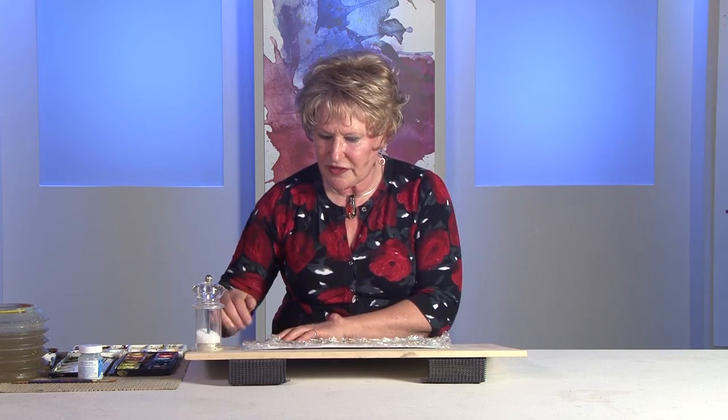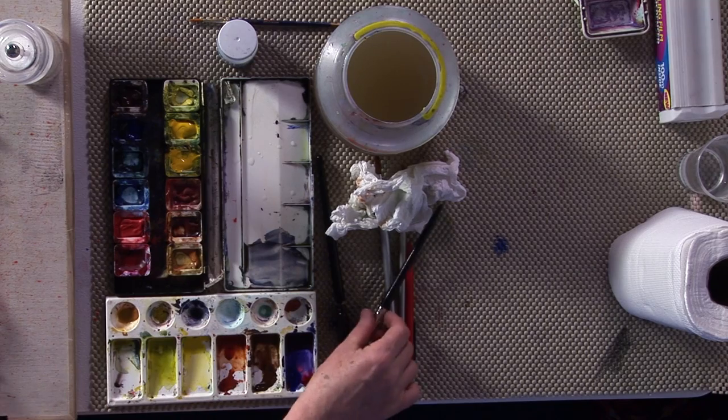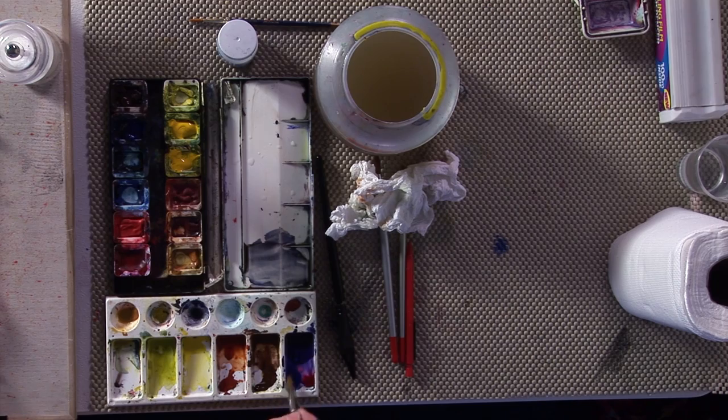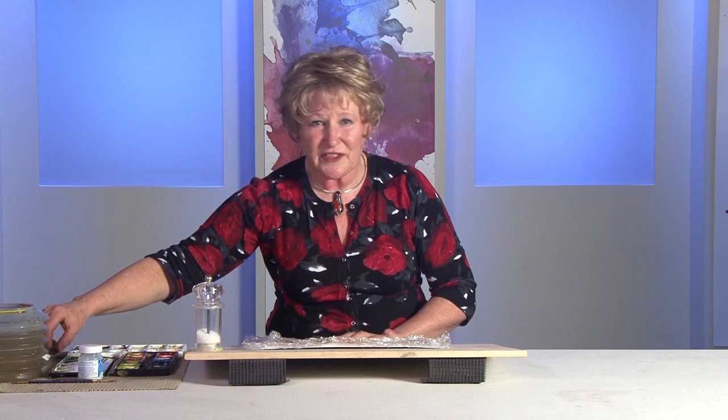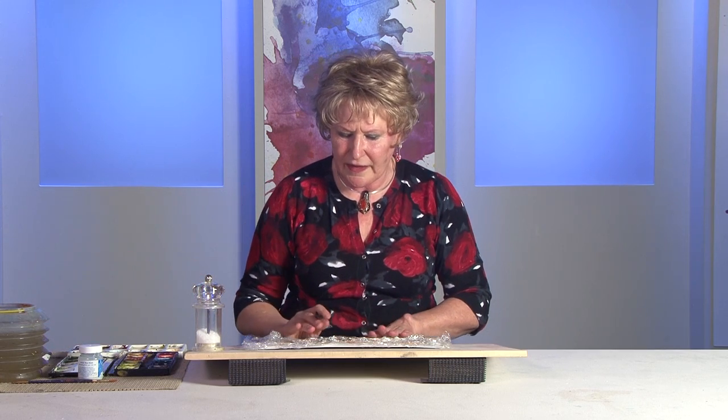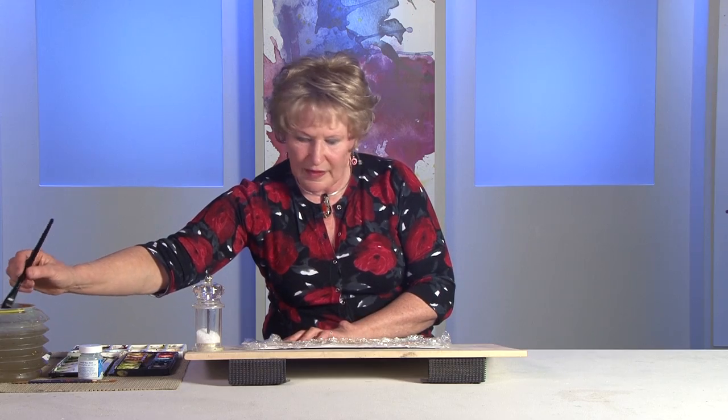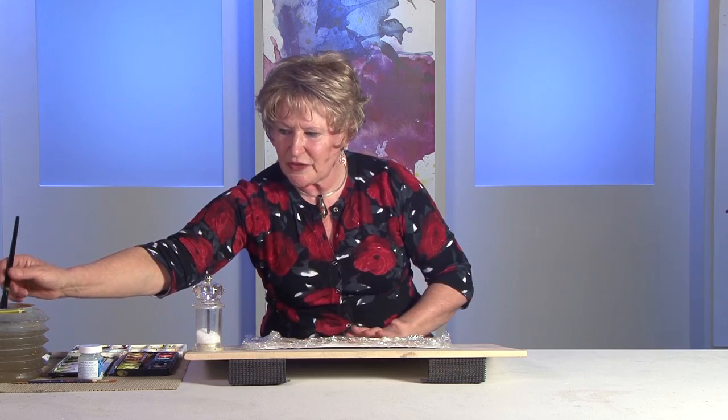So what we're going to do is a similar sort of thing. I've mixed up some colours. I'm going to use ultramarine blue and a touch of Alizarin crimson to give me a nice rich purpley colour. And then we're going to do the same thing as we did before. We're going to wet the areas we're going to work in and then put the paint onto it and immediately put the salt into it.